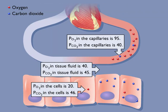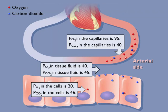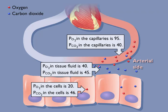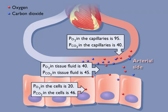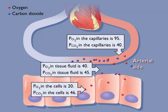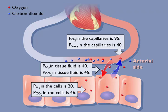Some oxygen was removed from the blood to nourish lung tissue. Therefore, the PO2 in arterial blood leaving the heart is 95. Oxygen diffuses out of the arterial ends of tissue capillaries into the tissue fluid, then into the cells, and carbon dioxide diffuses out of the cells into the tissue fluid, then into the blood because of differences in partial pressures.